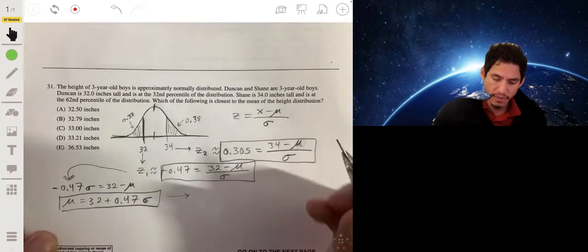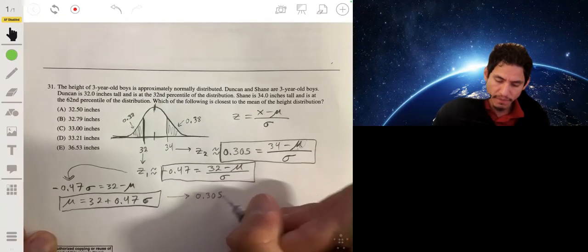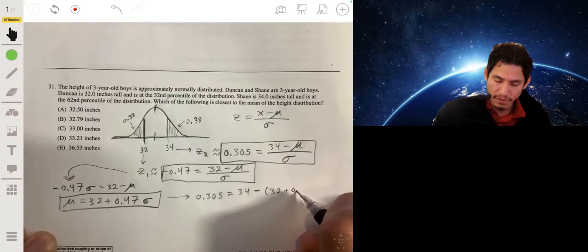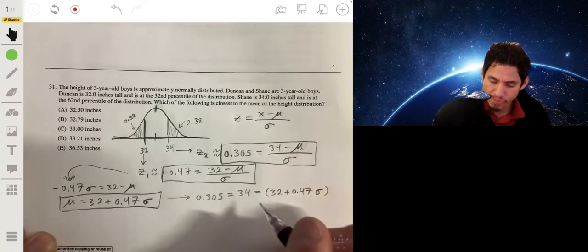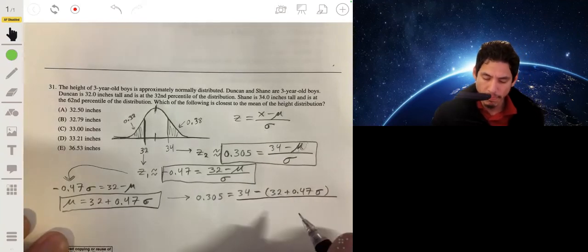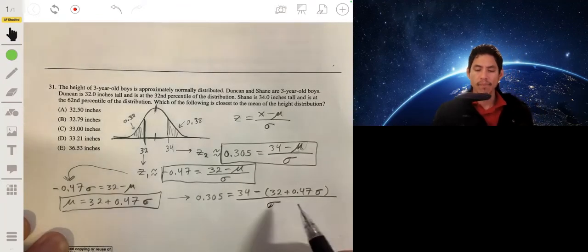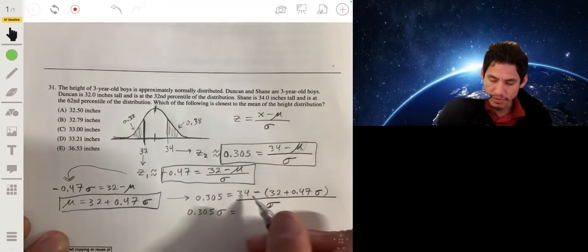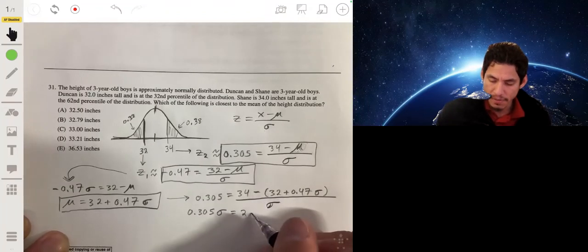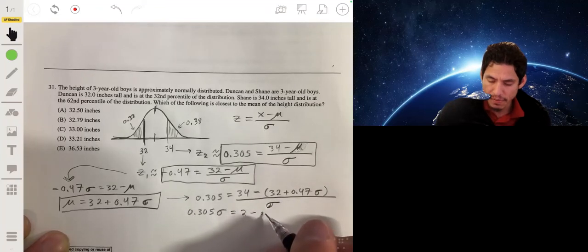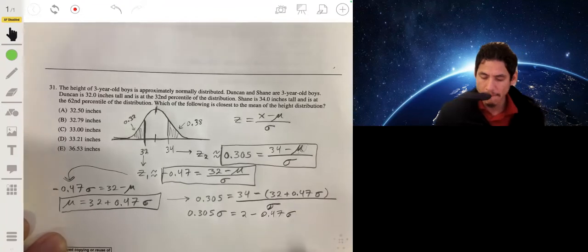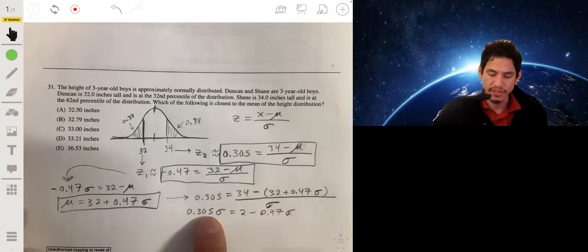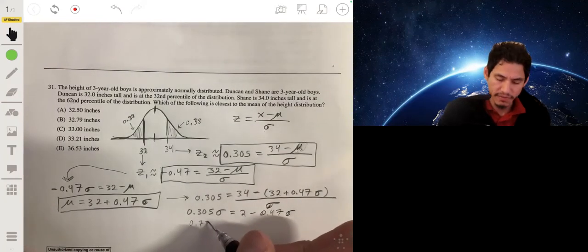Now what we can do is then substitute this into this mu over here. So we're going to get 0.305 is equal to 34 minus this value here, so minus 32 plus 0.47 sigma, all over sigma. Multiply both sides by sigma, you'll get 0.305 sigma equals 34 minus 32 which is 2, minus 0.47 sigma. Okay, so then we add 0.47 sigma to both sides, we'll get 0.775 sigma equals 2.